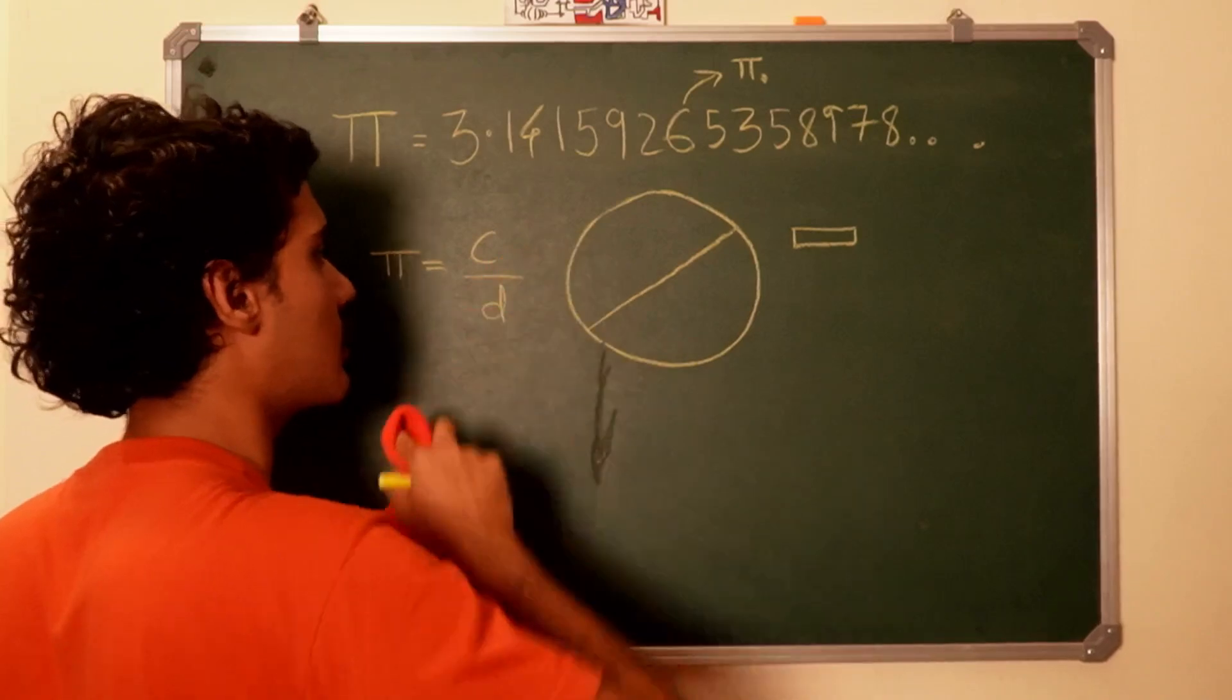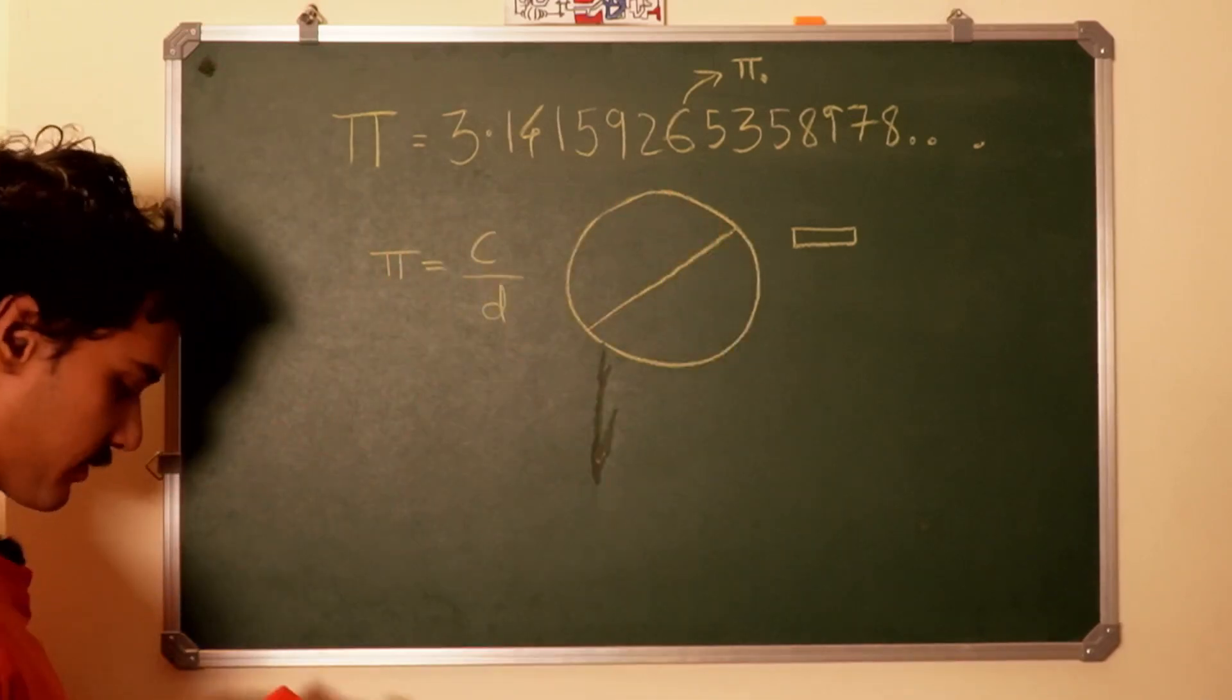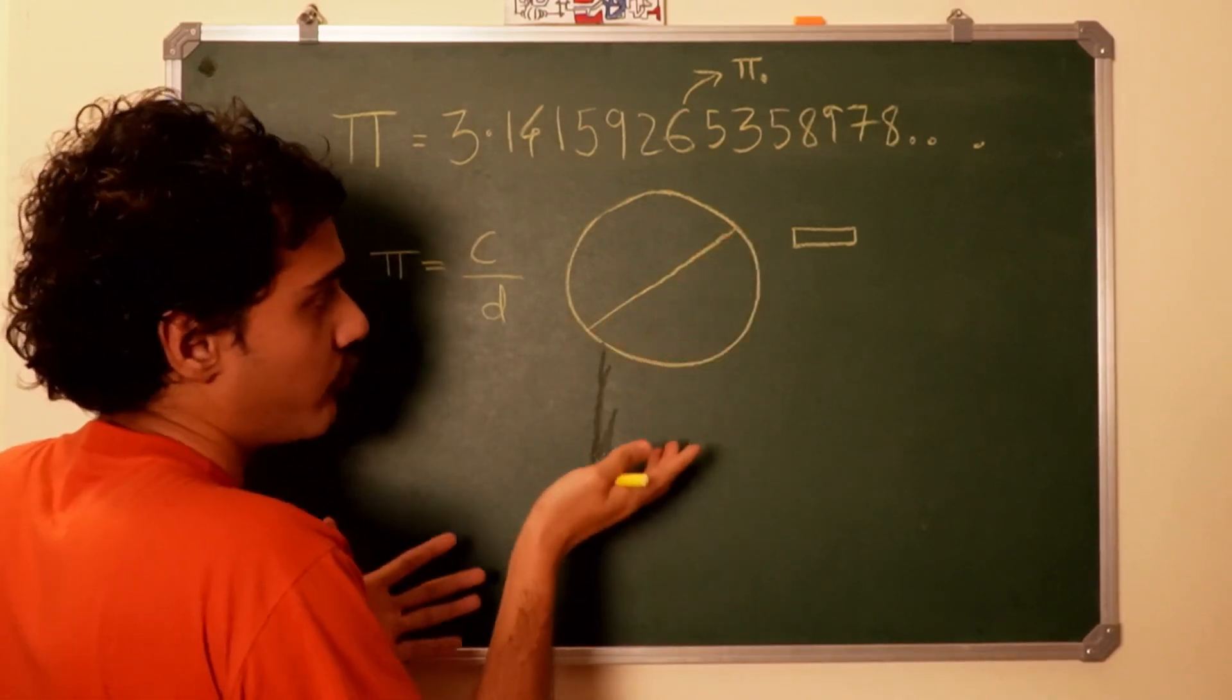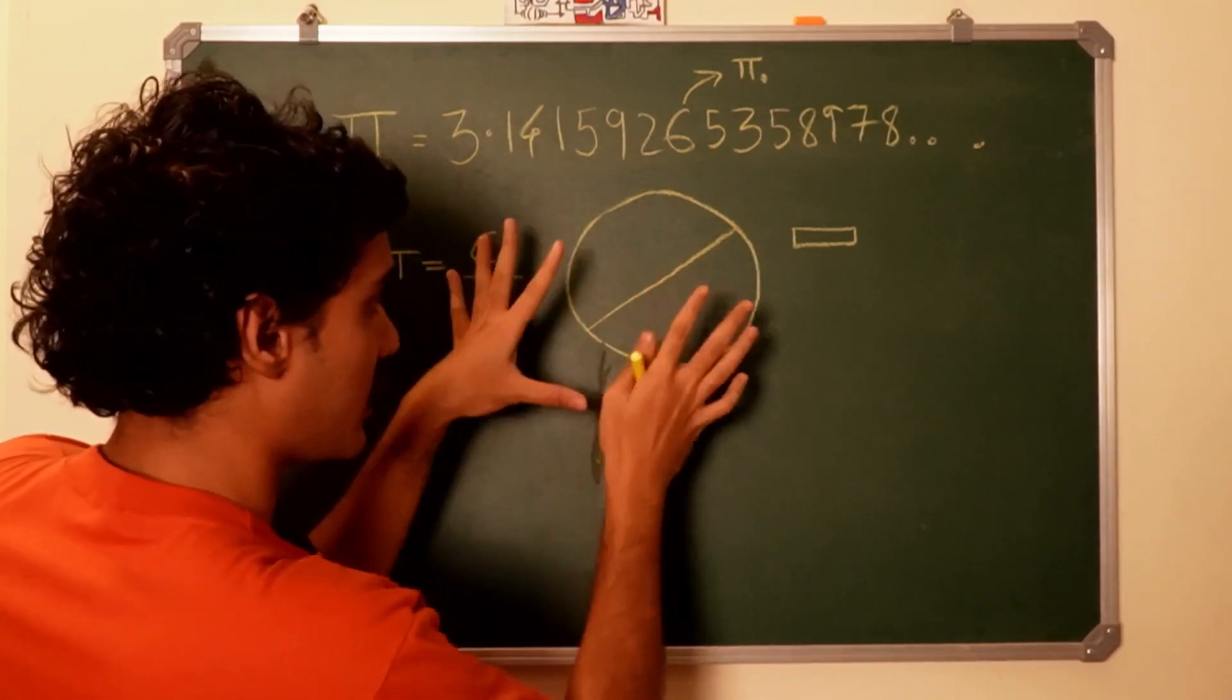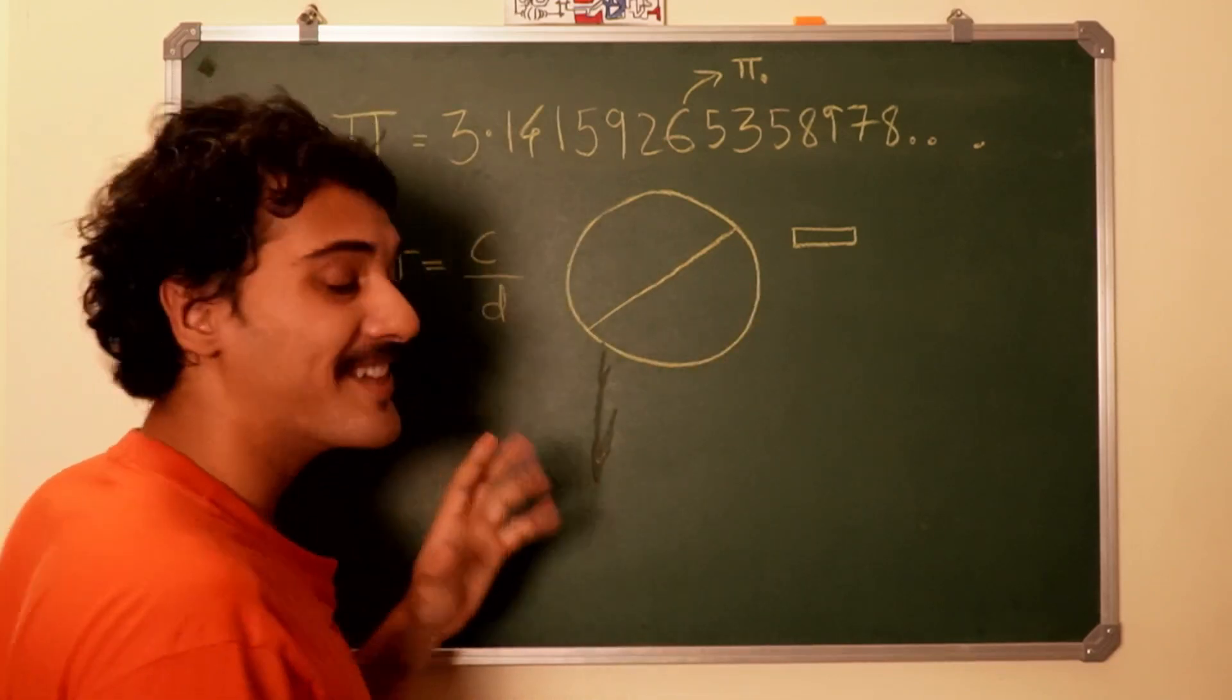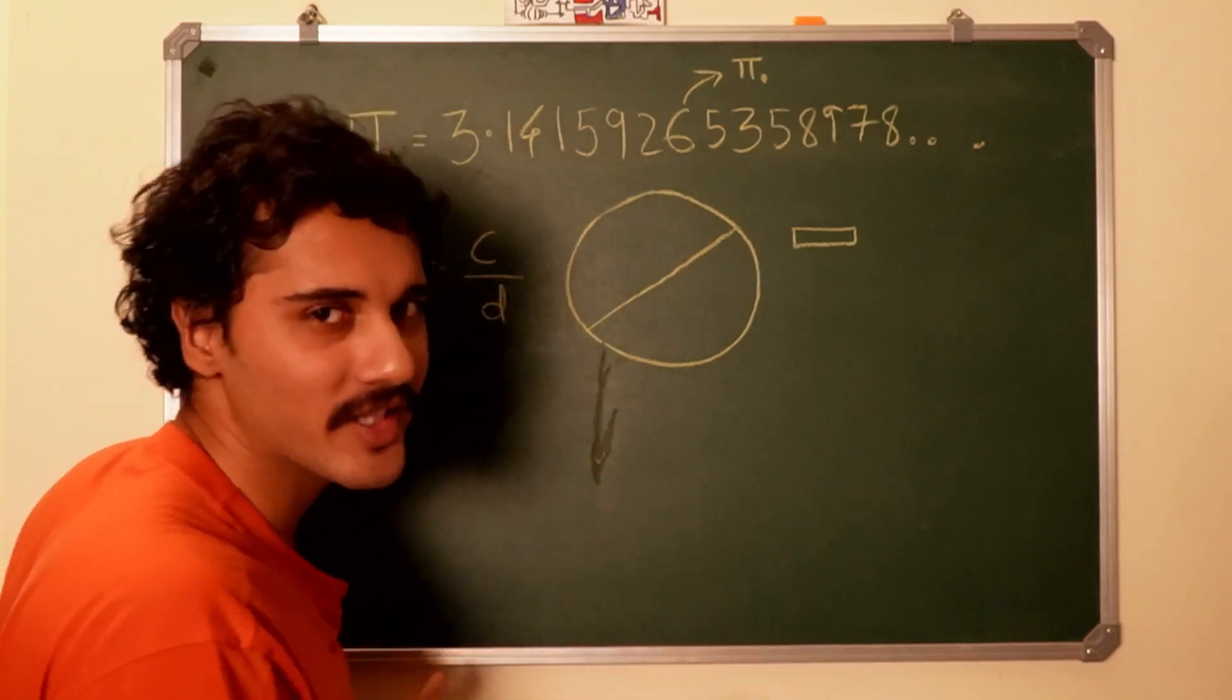So this is how we would measure the circumference and the diameter. For a ring which we would just see like this, it wouldn't change, of course not.